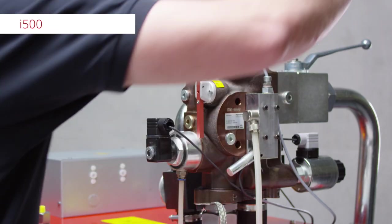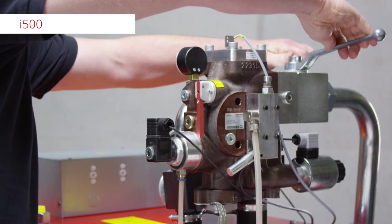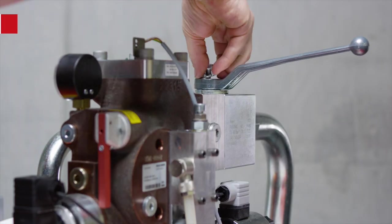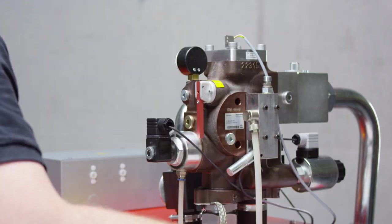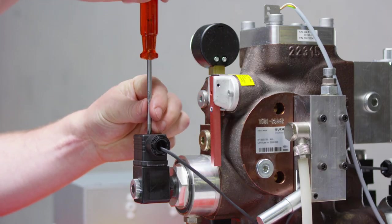For the I500, close the ball valve and remove the lever. Remove the M3 screw from the solenoid plug.